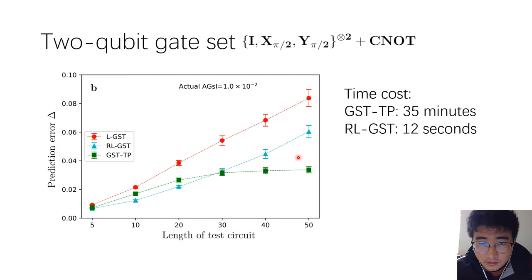In this case, the time cost advantage of our method is more pronounced. For one round of the procedure, GST took about 35 minutes, but for our RLGST, it just took 12 seconds.